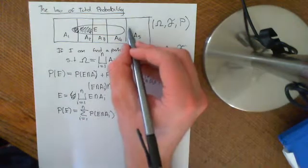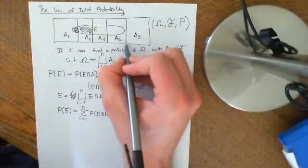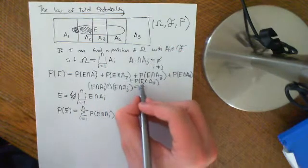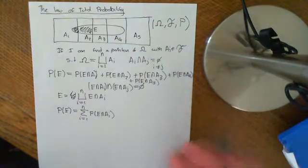Obviously, for instance, if I intersect E with A5 and there's nothing there, this will just be the empty set, so you'll get 0 — you'll just be adding 0. That's not a problem for us.